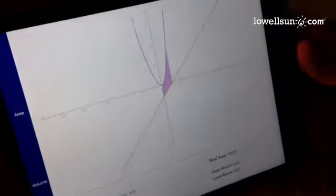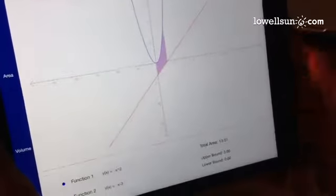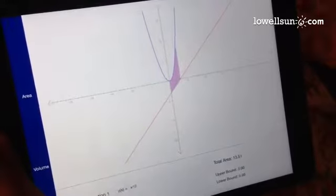So here, I put in x squared and x minus 3, and I found the area between them, which was found to be 13.51. This is an approximation that I wrote.